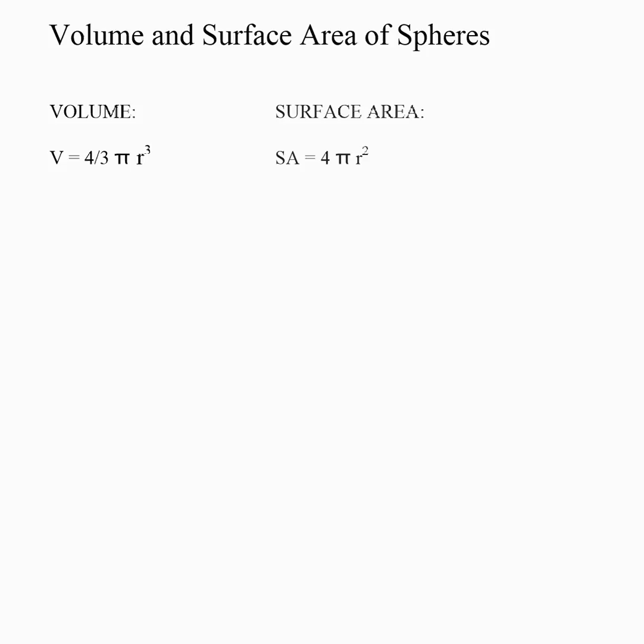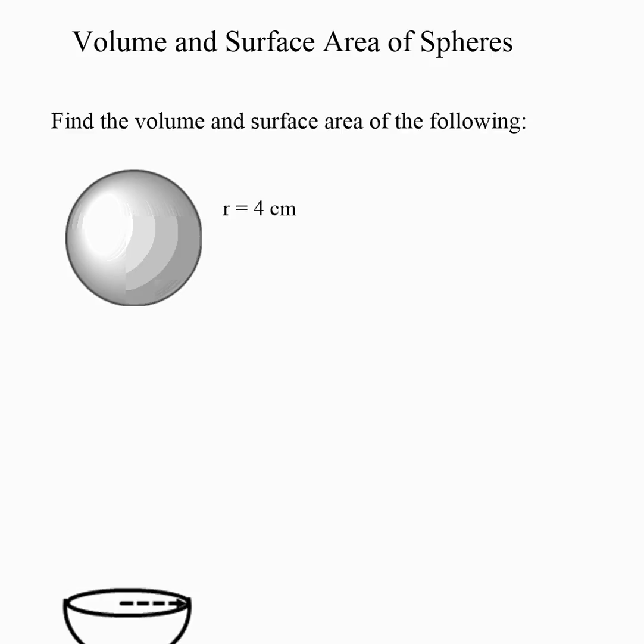A couple things you might want to do when you're putting it in your calculator. You could do four times pi times r cubed and then divide by three. So that might make it easier for you in terms of the order of how you do things. You can also punch in four-thirds times pi times r cubed. And then surface area of the sphere is four pi r squared. So let's just look at a couple brief examples to refresh your memory on how to use those formulas.